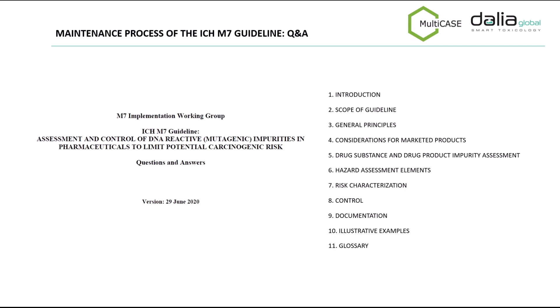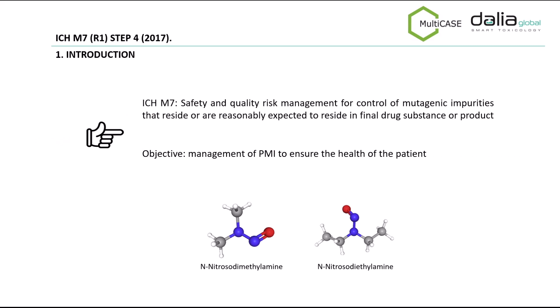As seen in the slide, the Q&A document is structured in different sections that fully match with the M7 guideline. In this webinar we'll briefly review the ideas of the M7 guideline and then we'll see the new ideas in the Q&A document. From my side I'll review the first four sections as well as the risk characterization and control strategy sections. Dr. Sayakov will review general principles and hazard assessment sections as well as the first question in section 9. Sections 5, 10 and 11 of the M7 guideline have not been modified in the Q&A document so they will be only briefly reviewed.